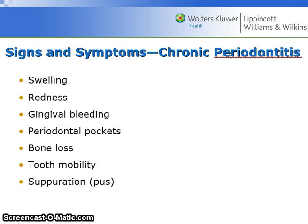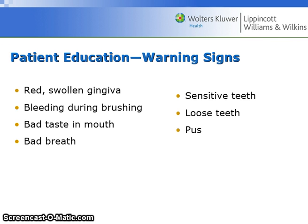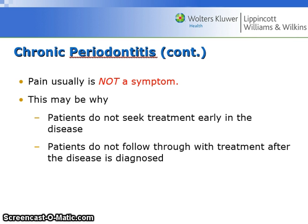Signs and symptoms of chronic periodontitis are swelling, redness, gingival bleeding, periodontal pockets, bone loss, tooth mobility, and suppuration, which is pus. Warning signs to use when educating a patient: look out for red swollen gingiva, bleeding during brushing, bad taste in the mouth, bad breath, sensitive teeth, loose teeth, or pus.